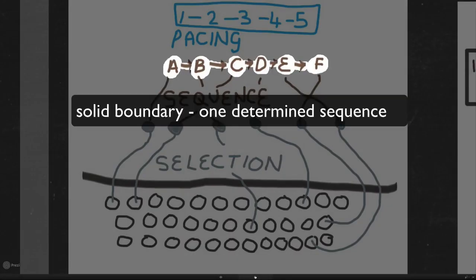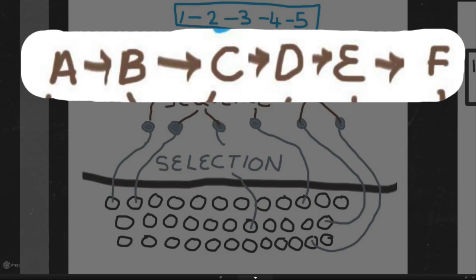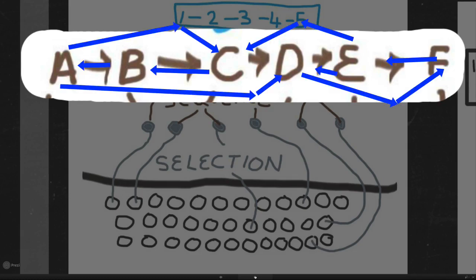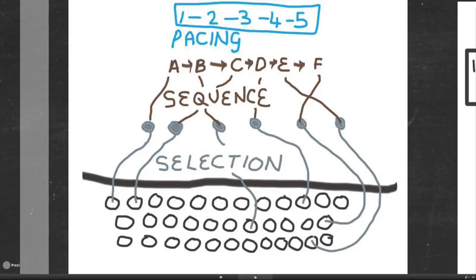In terms of sequencing — question five — you can either have a solid sequence where you are crystal clear: it goes A, B, C, D, E, F and that's it. Or you can open up the sequence to a number of possible options. You could tell the students what the selection is, but then say you're not quite sure how to move from point A to point F — why don't you try and find the best sequence that suits you? That opens the sequence line.